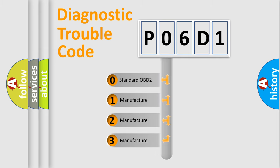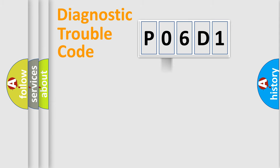If the second character is expressed as zero, it is a standardized error. In the case of numbers 1, 2, 3, it is a manufacturer-specific expression of the car-specific error.